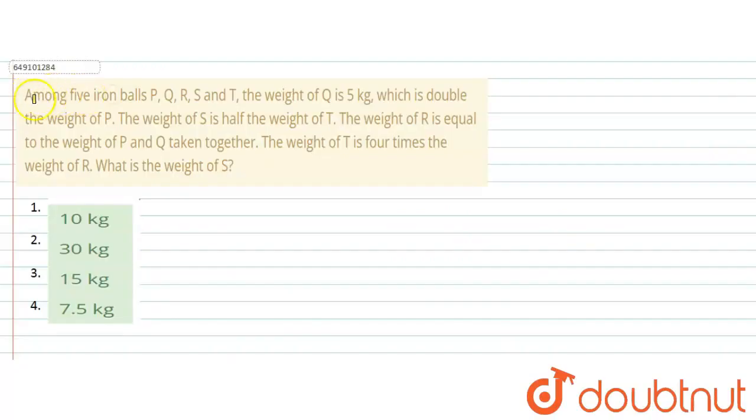The question says, among 5 iron balls P, Q, R, S, T, weight of Q is 5 kg, which is double the weight of P. Weight of S is half of the weight of T. Weight of R is equal to weight of P and Q taken together. Weight of T is 4 times weight of R. What is the weight of S?